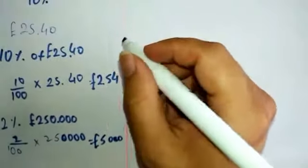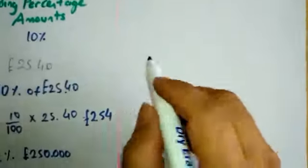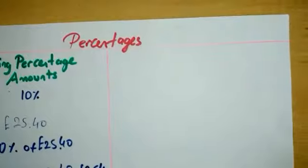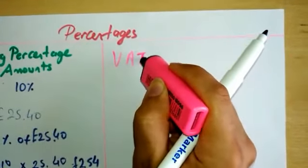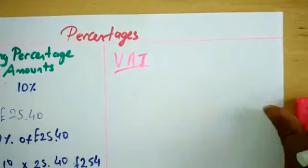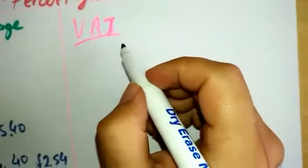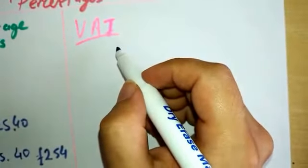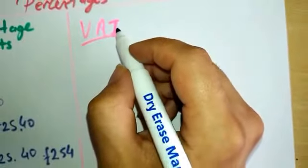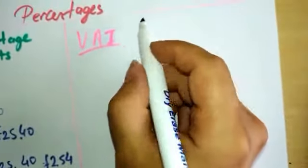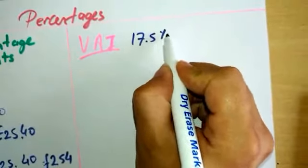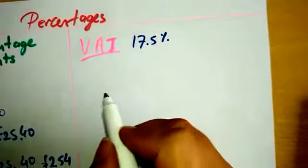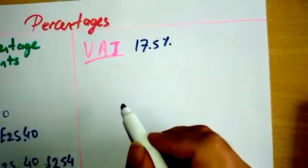Many things that we buy have VAT added to the price. Let us explore a bit more about VAT now. To calculate the purchase price we have to pay, we need to find VAT, which in general is about 17.5%, and it is added on to the price. This can be done in two ways.